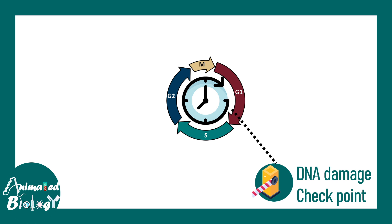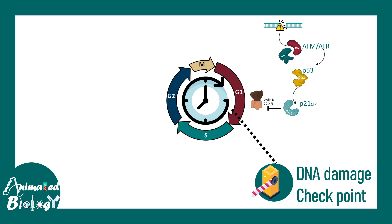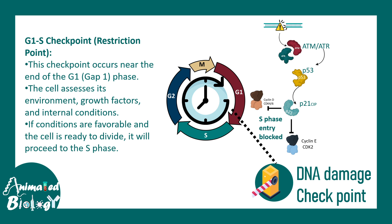To summarize the G1/S checkpoint: DNA damages are sensed by kinases which recruit p53; p53 further activates cyclin-dependent kinase inhibitors, thereby inhibiting cyclins. Cyclin D/CDK4, which operates in G1 phase, is inhibited, and Cyclin E/CDK2, which is important for S phase transition, is also blocked. As a result, entry into the S phase is blocked and the cell cannot move from G1 to S phase. pRb, another tumor suppressor protein, also plays a critical role in this checkpoint.